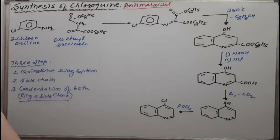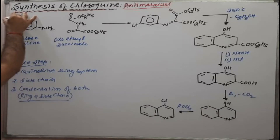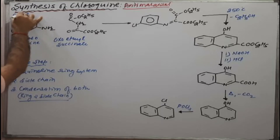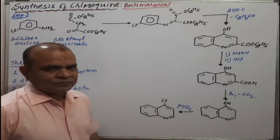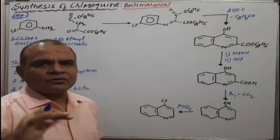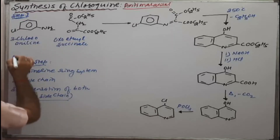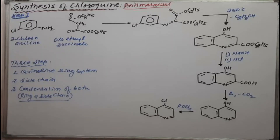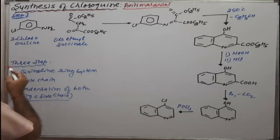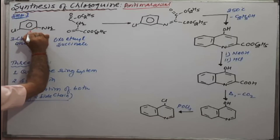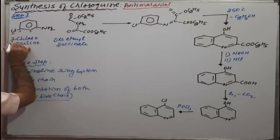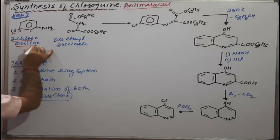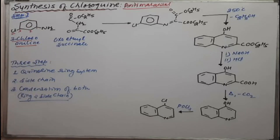Now come to step one. This is step one — the synthesis of the quinoline derivative, or quinoline ring system. This is our starting material. Positions one, two, and three — the third position has a chloro group. That is the aniline, that is the chloro — 3-chloroaniline.